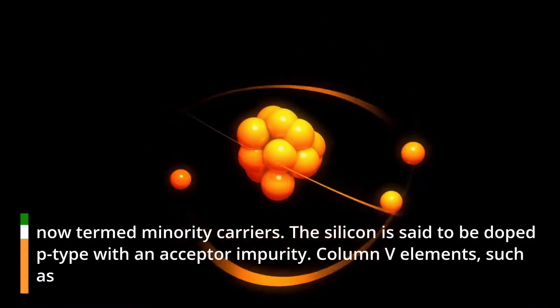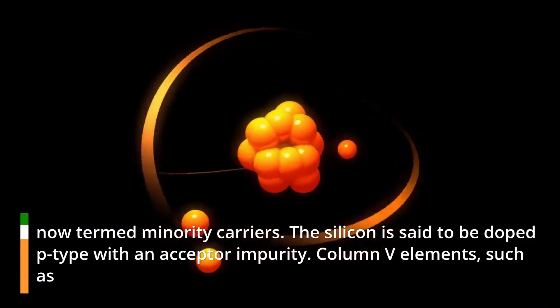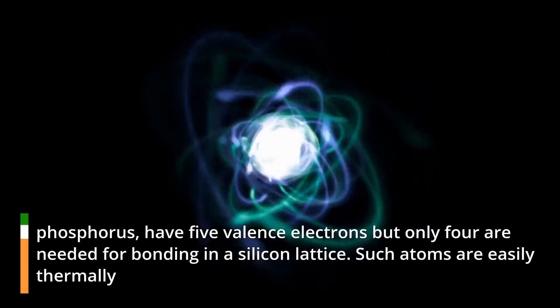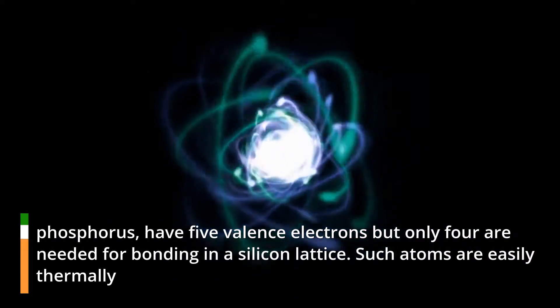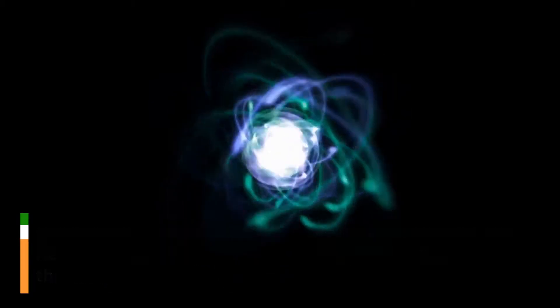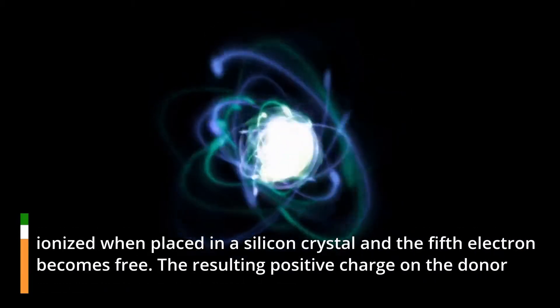The silicon is said to be doped P-type with an acceptor impurity. Column 5 elements, such as phosphorus, have five valence electrons but only four are needed for bonding in a silicon lattice. Such atoms are easily thermally ionized when placed in a silicon crystal and the fifth electron becomes free.